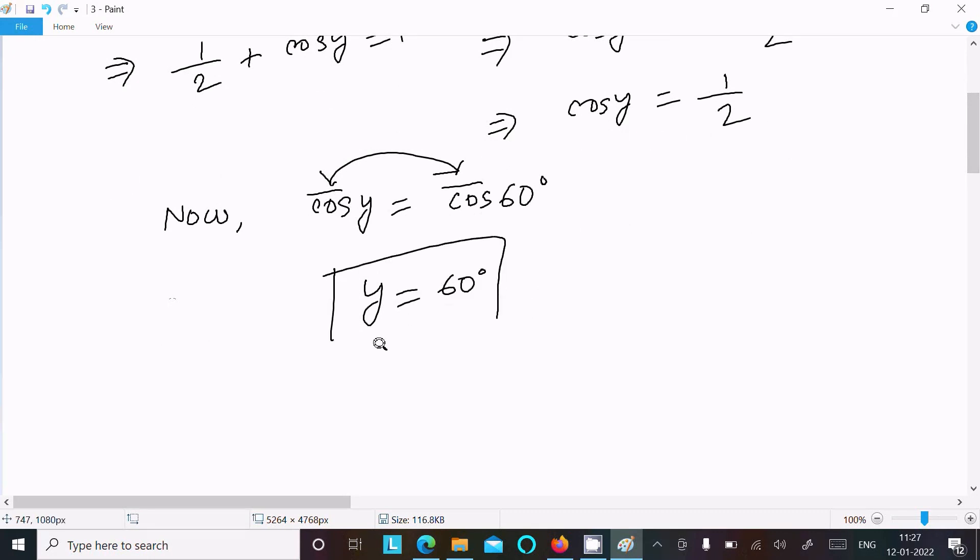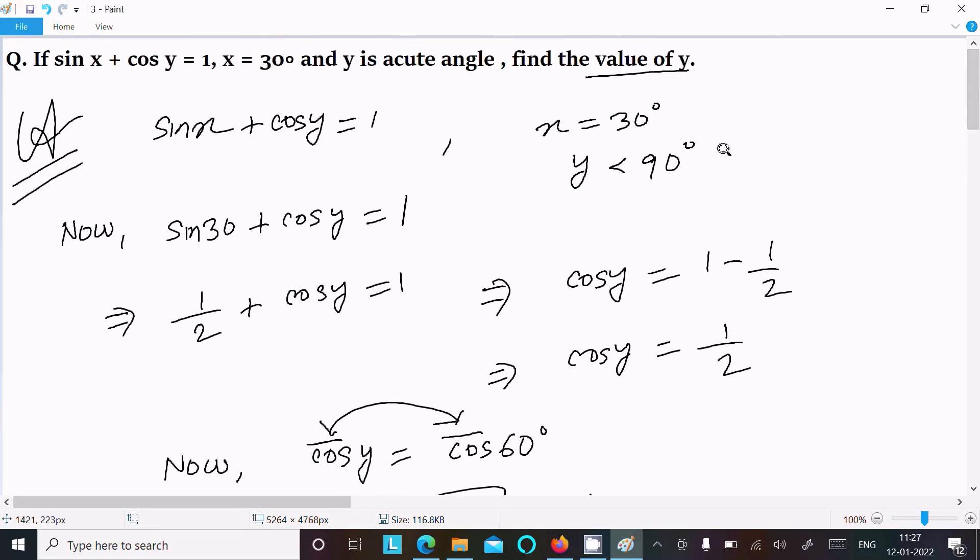So this is the answer of this question. And here you can see y equals 60 degrees. 60 less than 90 degrees, this condition is also true. Acute angle means the angle should be less than 90 degrees.